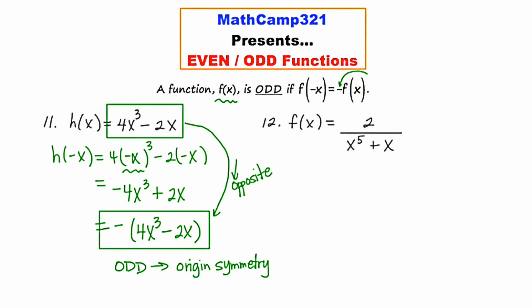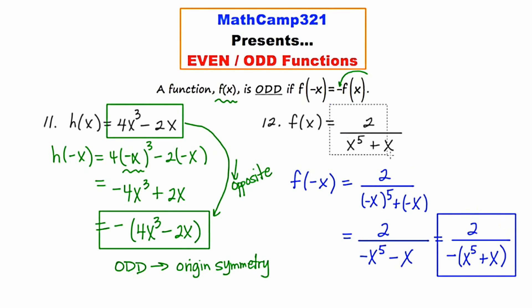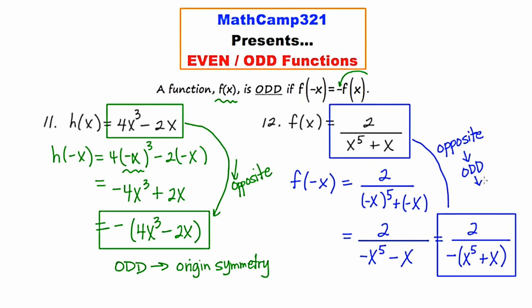Finally, f of x is equal to 2 over x to the fifth plus x. I've never seen this graph before — let's assess its symmetry by replacing every occurrence of x with negative x. The numerator just stays 2. Negative x to the fifth expands to negative x to the fifth, and plus negative x is really minus x. Now I factor a negative out of the denominator, leaving me with negative times the quantity x to the fifth plus x. I can stop here because what I just wrote is exactly the opposite of what I started with: 2 over x to the fifth plus x versus 2 over the opposite of x to the fifth plus x. These two rational expressions are opposites, which means we can classify the function as odd — meaning it will exhibit origin symmetry.